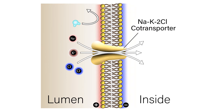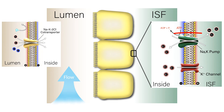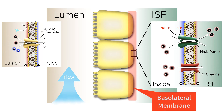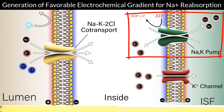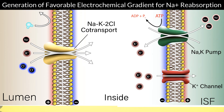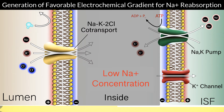This electrochemical gradient for sodium reabsorption is produced by the activities of the sodium-potassium pump and the leak potassium channels, both located at the basolateral membrane of the epithelial cells. The sodium-potassium pump extrudes three sodium ions and brings in two potassium ions per cycle, creating a low concentration of sodium inside the cell. Sodium then moves from regions of high concentration, such as the tubular lumen, to regions of low concentration inside the cell.